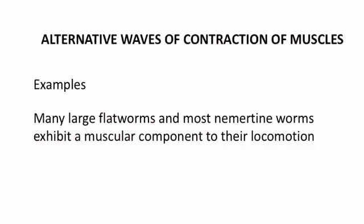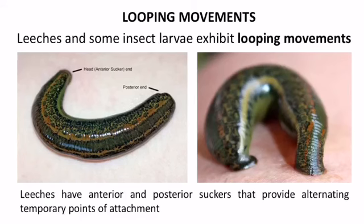Alternating waves of contraction of muscles can also be observed in various large flatworms and some nemertine worms, as they also move with the help of alternating waves of contraction of muscles.